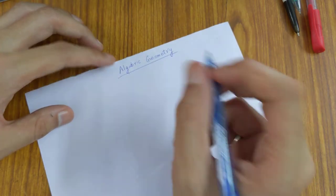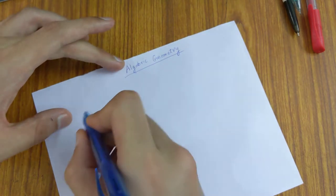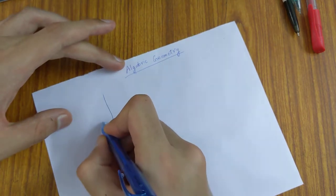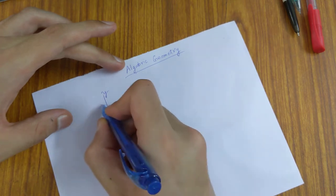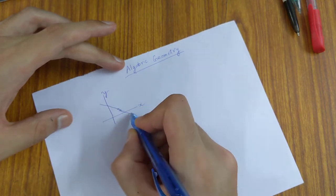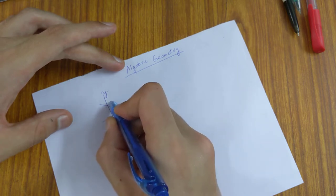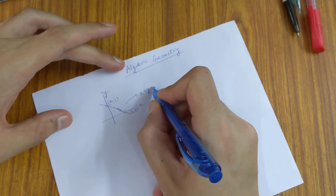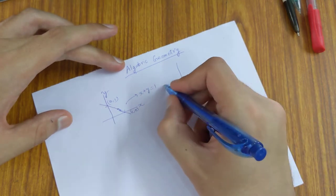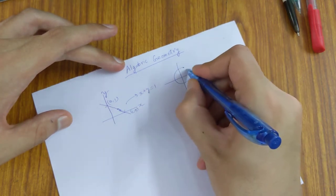algebraic equations. For example, if we consider this is the x-axis and this is the y-axis, and this is a line where this is (1,0) and this is (0,1), then this line can be represented as x + y = 1. Similarly, the circle here